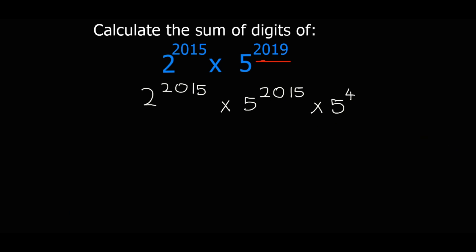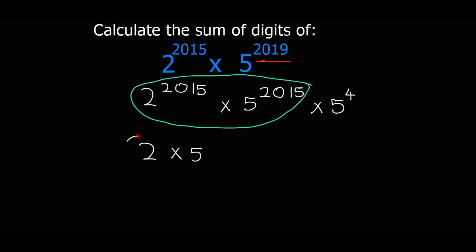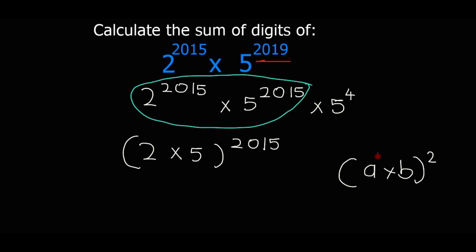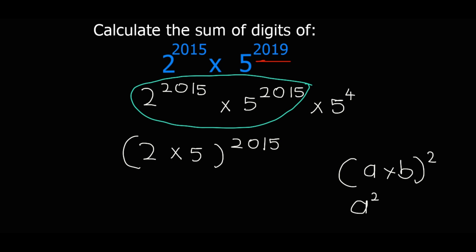Now I can write this as 2 times 5, all to the exponent 2015. This uses the law of exponents: if you have a times b to the exponent 2, it is the same as a squared times b squared. So we are just applying that rule in reverse.